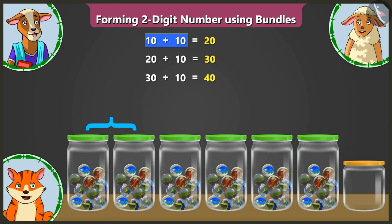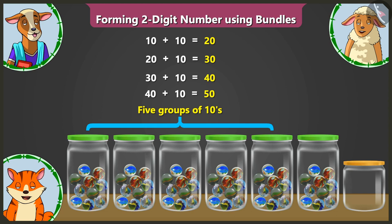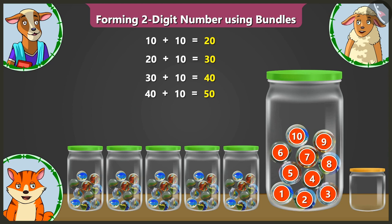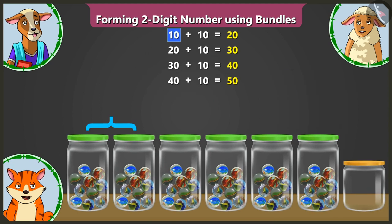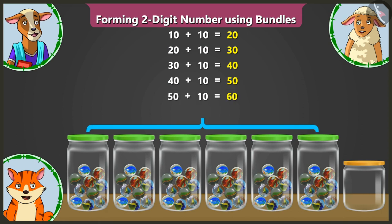This makes it 10 and 10 — 20, 20 and 10 — 30, 30 and 10 — 40, 40 and 10 — 50. Five groups of 10s. This 6th jar also has 10 marbles, making it 50 and 10 — 60. So these are 6 groups of 10s.